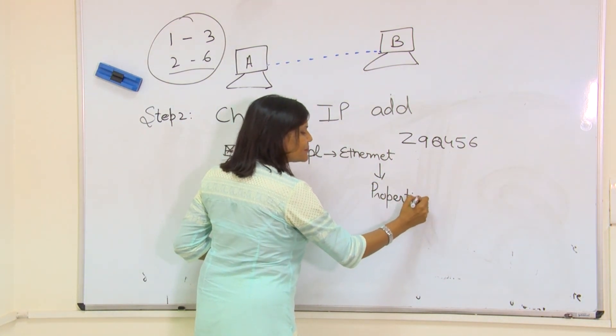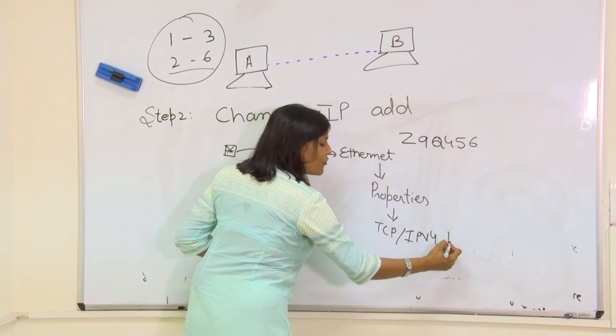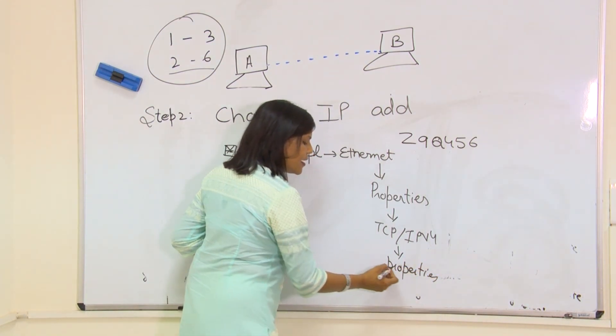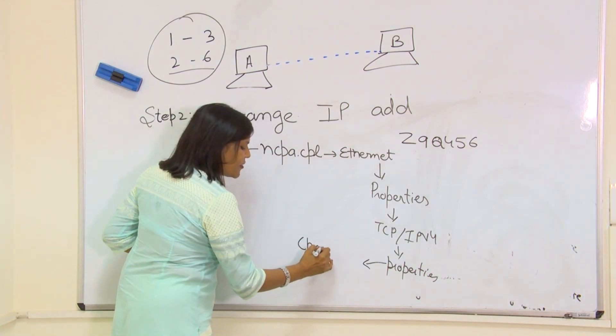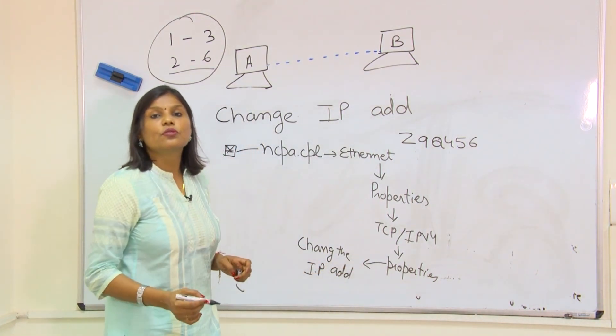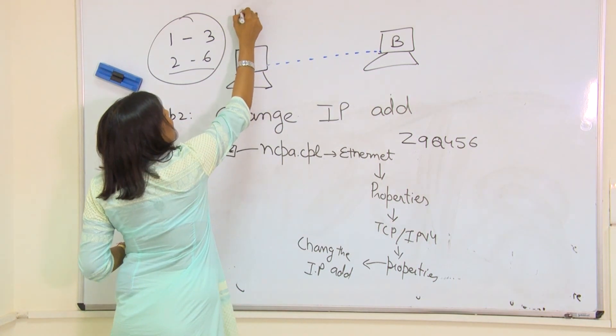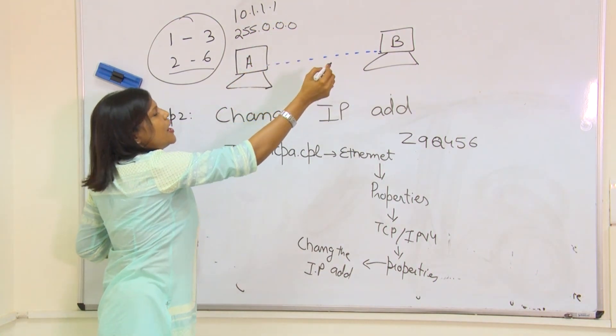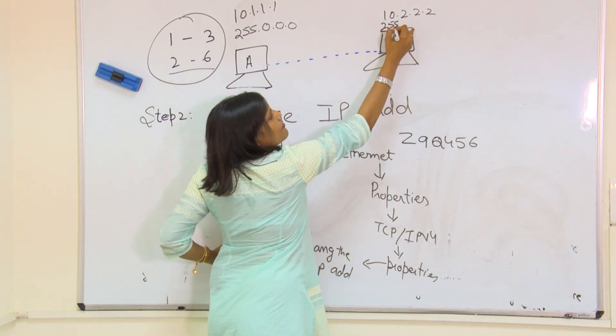Then TCP/IPv4 and again properties. A window will appear which will ask you to change the IP address. I am taking an IP address here 10.1.1.1 with subnet mask 255.0.0.0, and here I am taking the IP address 10.2.2.2 with subnet mask 255.0.0.0.